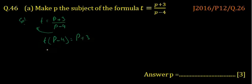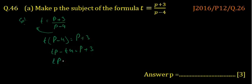The bracket can be opened by multiplying t, so it becomes tp minus 4t is equal to p plus 3. Or we may write tp minus 4t, taking the coefficient first.